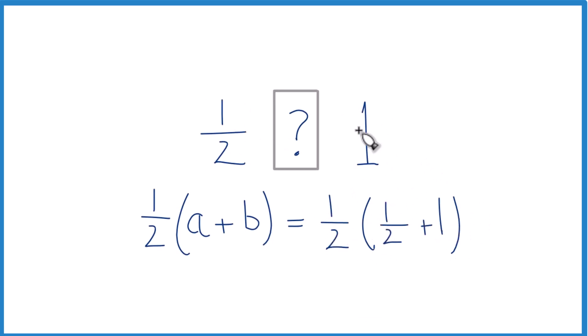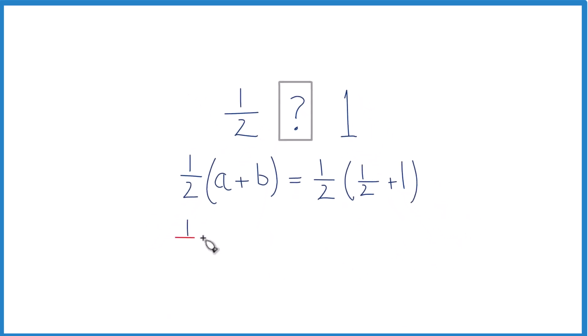So we need to add the one-half and the one together. Probably the easiest way is to say one-half times one-half, and instead of one we can just call this two over two. Two divided by two is still one, it's just now that we have our denominators the same, and we need to do that so we can add our fractions.